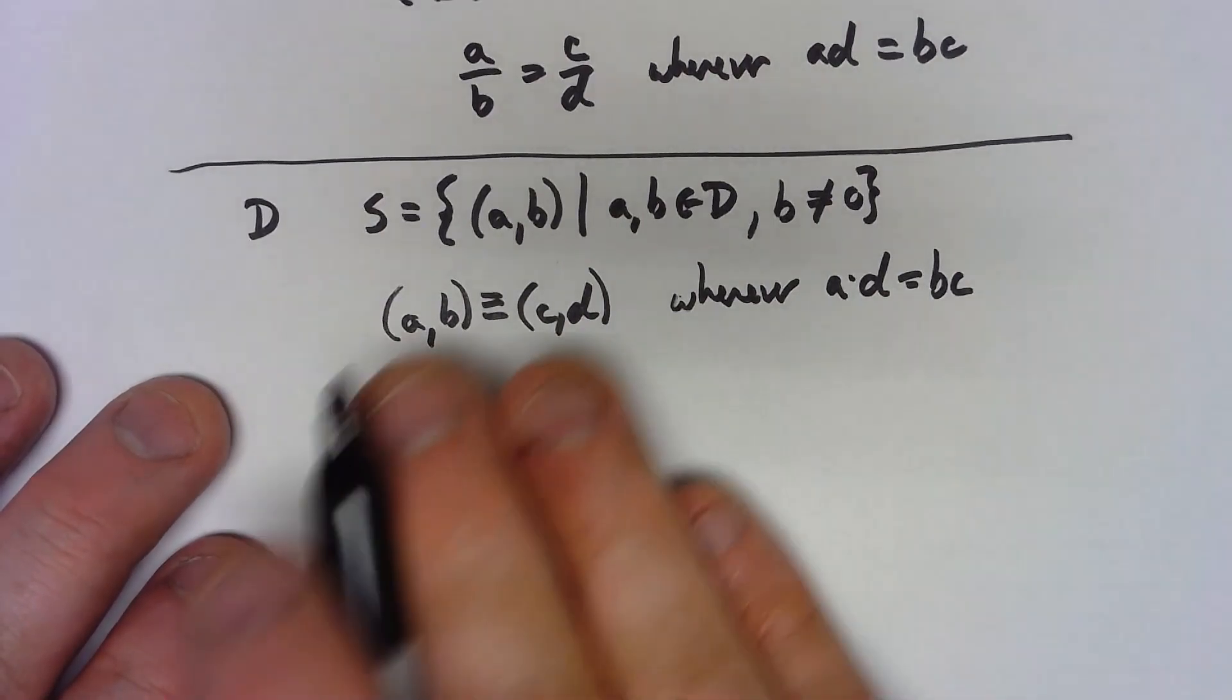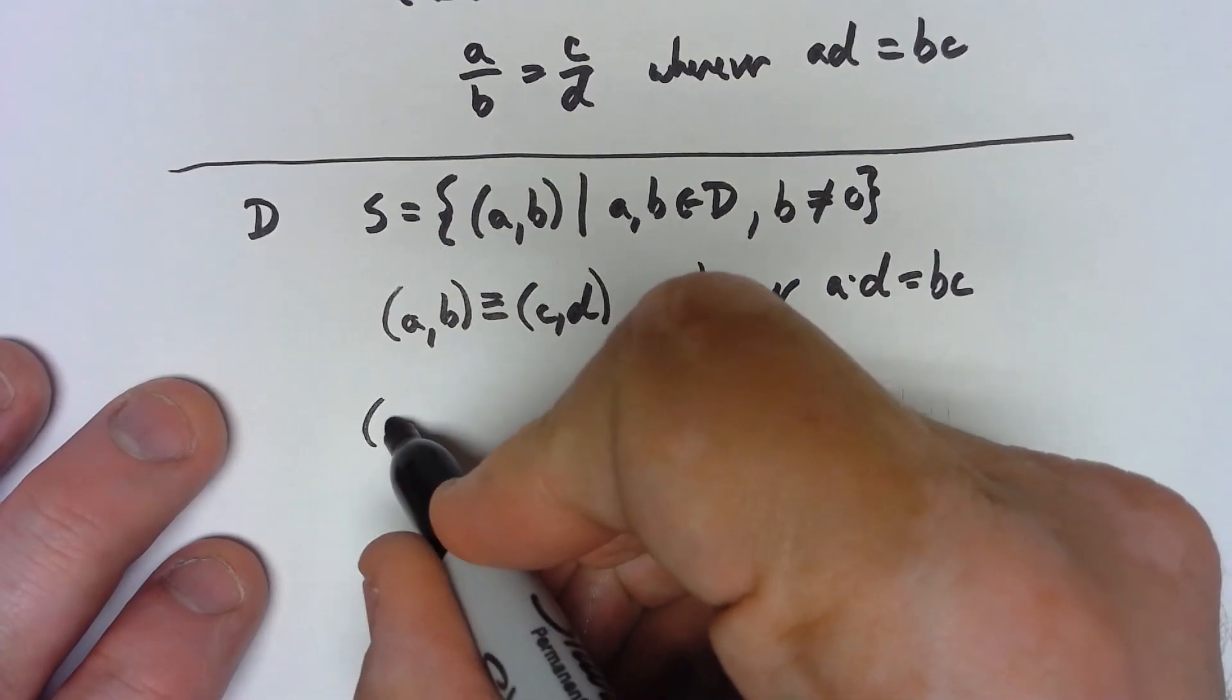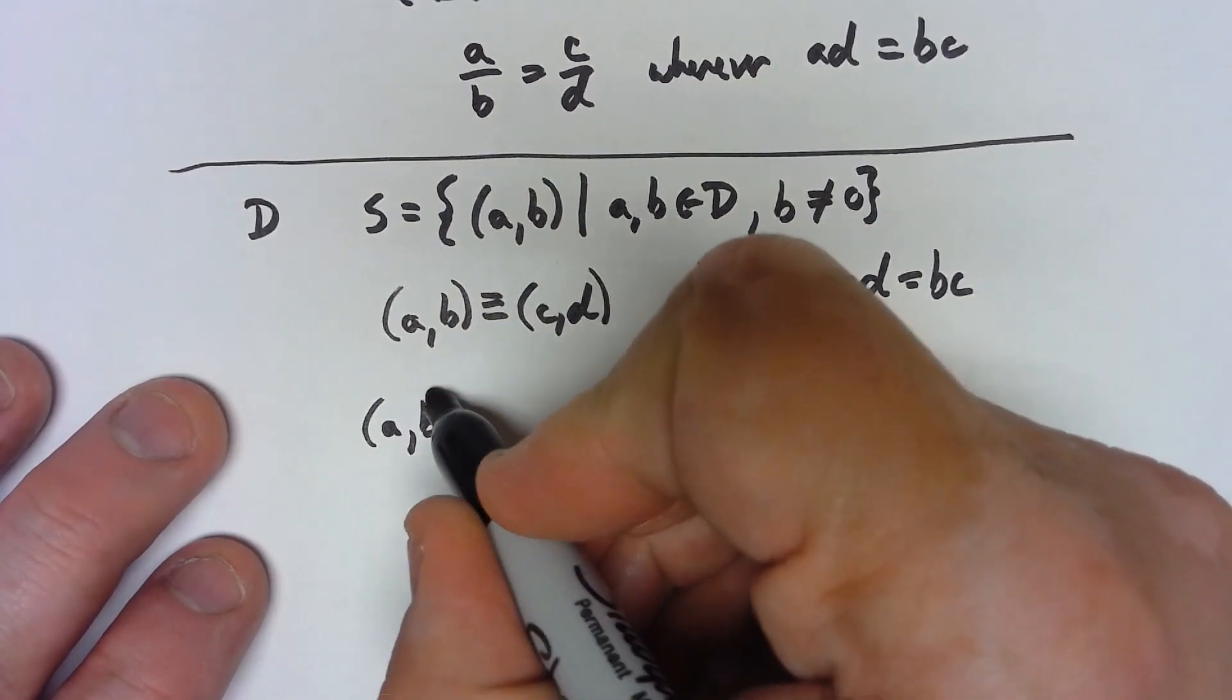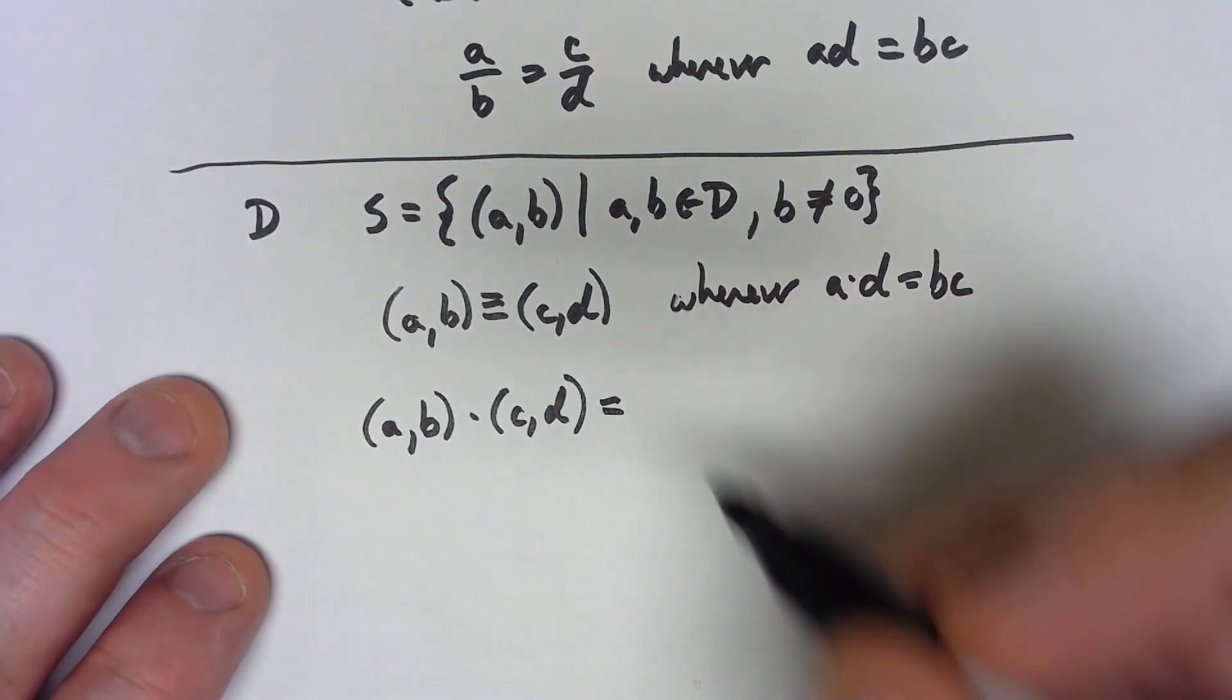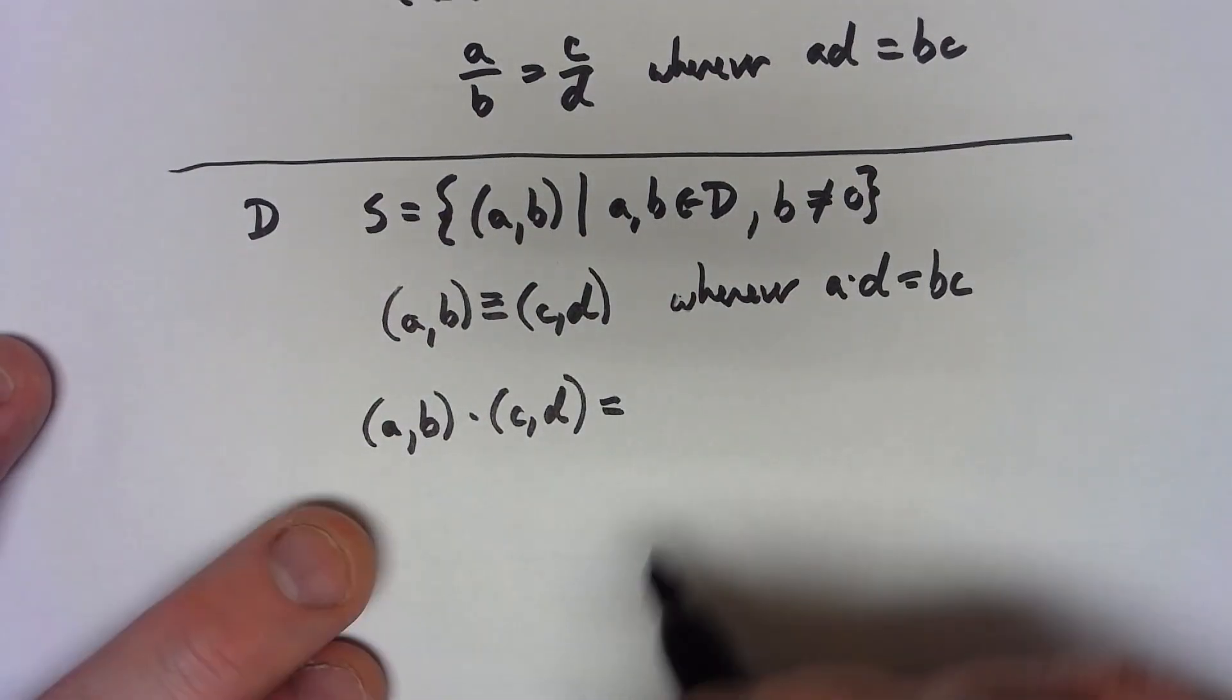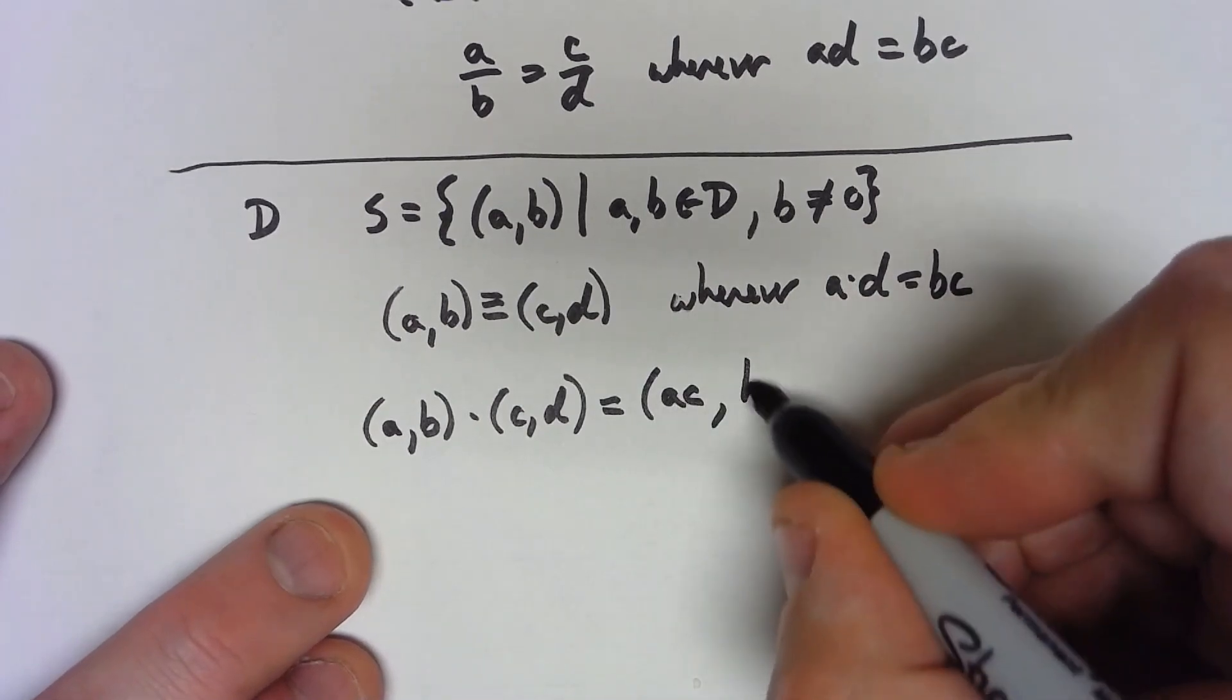Then we need to define our ring operations here. We're going to say that (a, b) times (c, d) is going to be kind of the obvious thing. We're going to say (a times c, b times d).